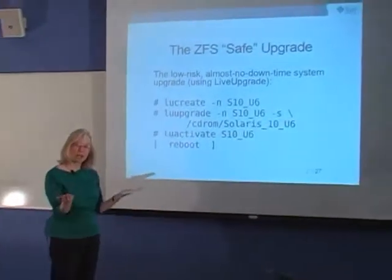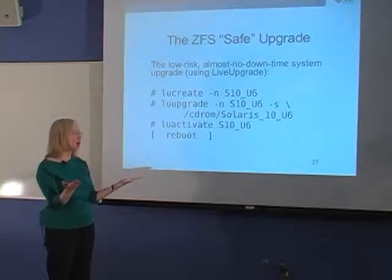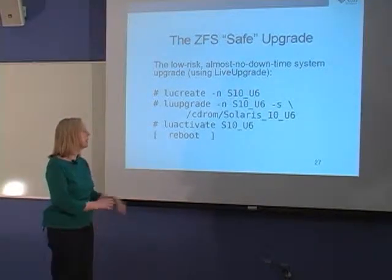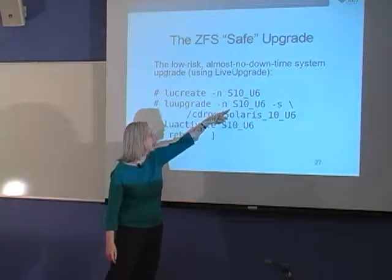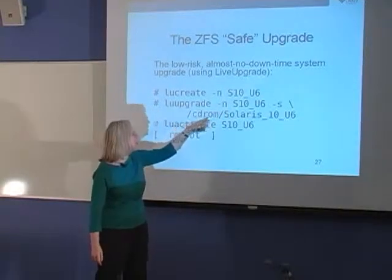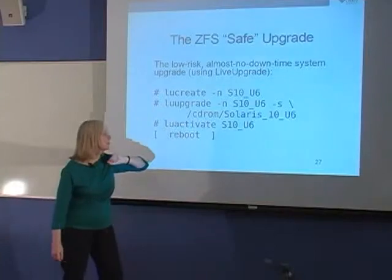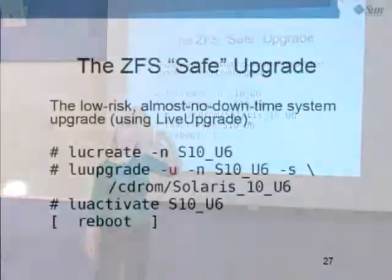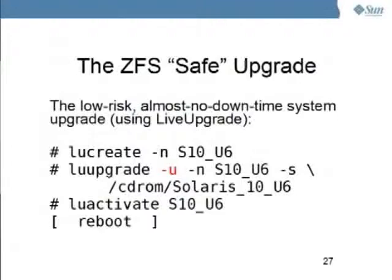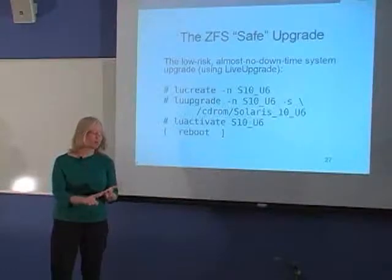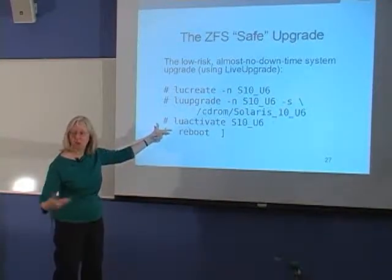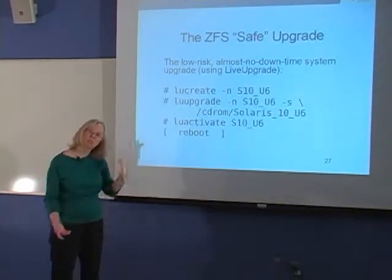Here is how you do a system upgrade on a system running with a ZFS root file system within a root pool - the low risk, almost no downtime system upgrade. First, you use the 'lucreate' command, which clones your current boot environment and creates a new one - in this case called S10U6. You then issue the 'luupgrade' command to upgrade this particular boot environment using a particular Solaris medium. And then once you've created and upgraded the environment, you activate it with 'luactivate' and reboot. You're up and running with your new environment, and you can still go back to the old one should you want to.